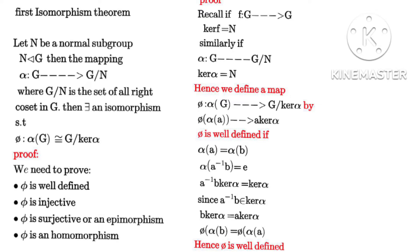Next we have the First Isomorphism Theorem, also known as the Fundamental Theorem of Homomorphism. We let N be a normal subgroup and φ be a homomorphism mapping a group G to another group. Then G is isomorphic to G over the kernel of φ.